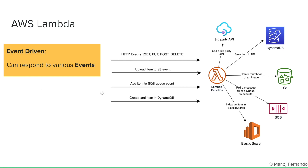We already discussed so many different events. One common event is HTTP events — standard HTTP events like GET, PUT, POST, DELETE. We can invoke Lambda functions through these events, and this is a popular use case. There are other events, such as an item getting uploaded to an S3 bucket. Whenever something is added to an S3 bucket, we can use that event to trigger a Lambda function — in this case, to create a thumbnail of that image.